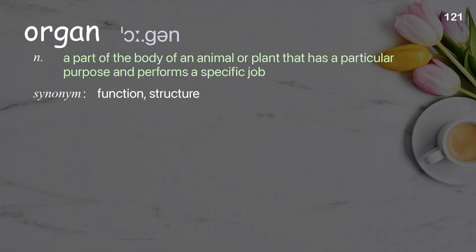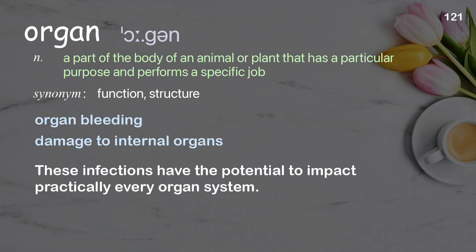Organ: a part of the body of an animal or plant that has a particular purpose and performs a specific job. Examples: organ bleeding, damage to internal organs. These infections have the potential to impact practically every organ system.